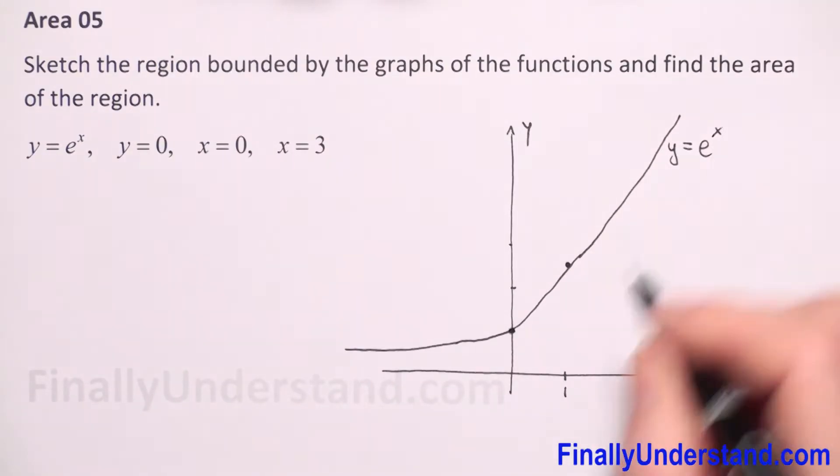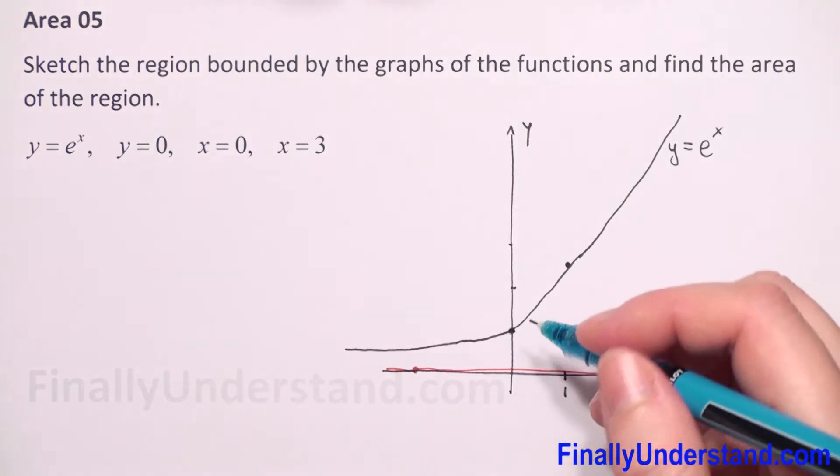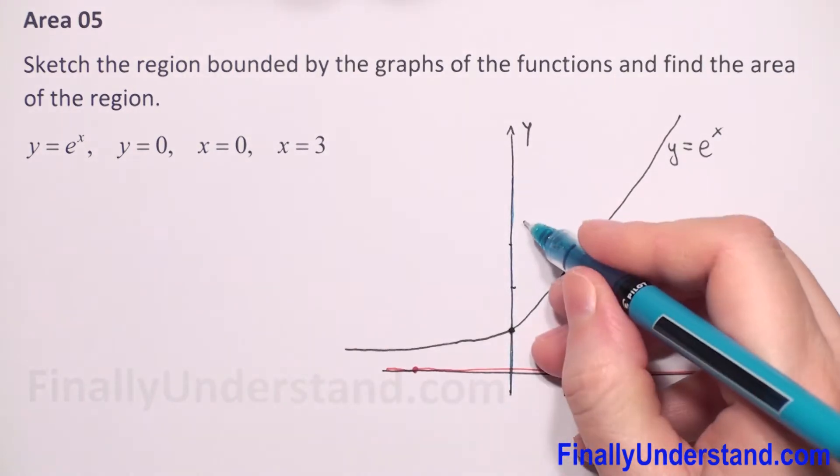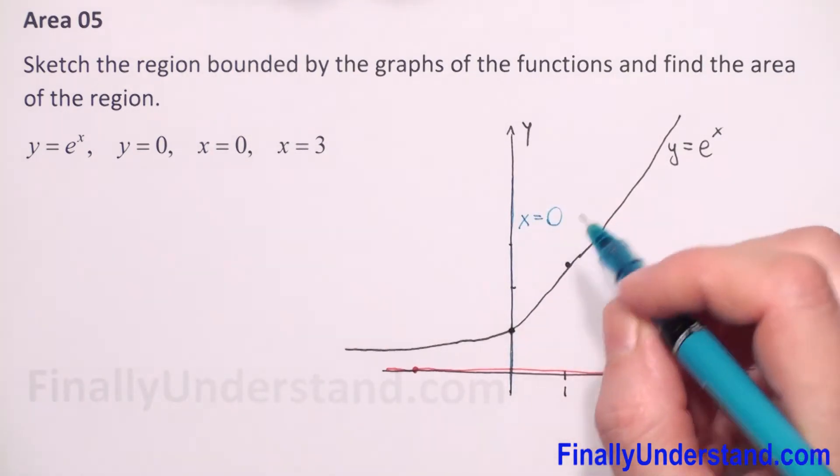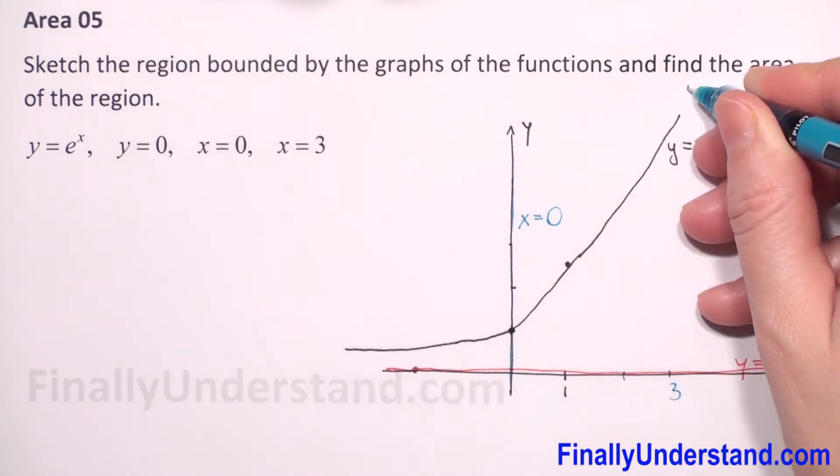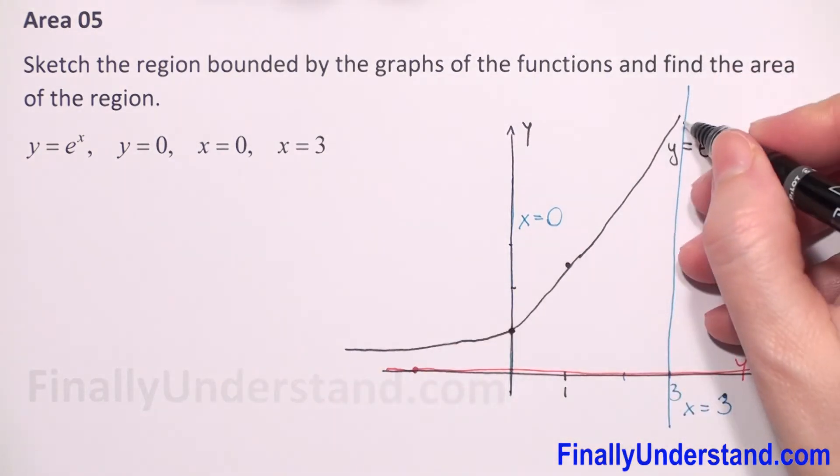Next we have y equals zero, so this is our x-axis. This is y equals zero. Next we have x equals zero, which is our y-axis. This is x equals zero. And we have x equals three. This is our fourth function, x equals three.